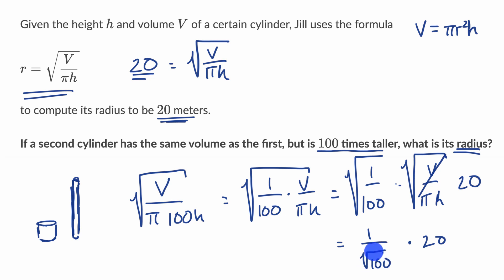The square root of 100, the principal root of 100, is 10. So the radius of our new cylinder, the second cylinder, is going to be 1 tenth of 20, which equals 2 meters. And we're done.